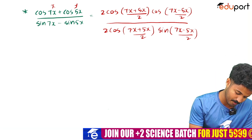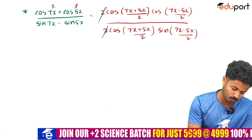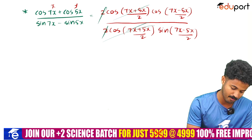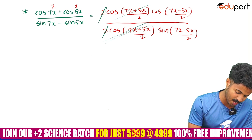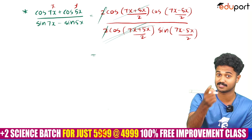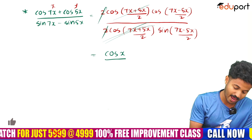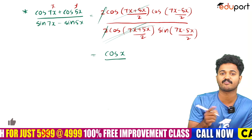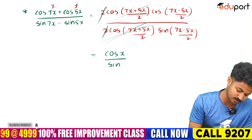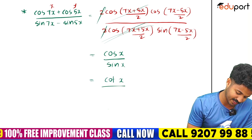After cancelling the 2s and cos(6x) terms, we get cos(x)/sin(x), which is cot x. So the answer is cot x.